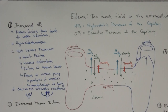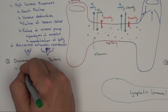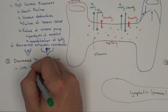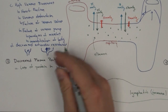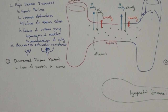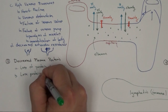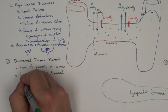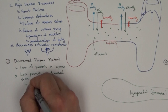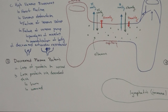Decreased plasma proteins are another mechanism. First, protein can be lost in the urine — various kidney conditions can cause this. You can also lose protein via denuded skin: if you've had a burn or a wound, it seeps fluid that is high in protein, so you lose protein that way.